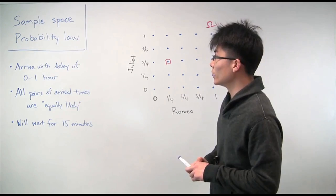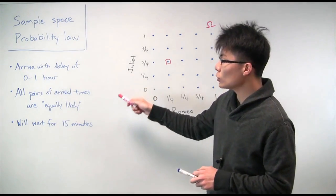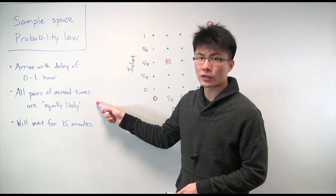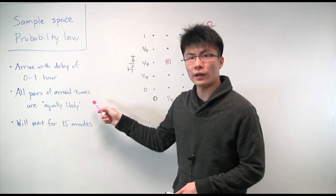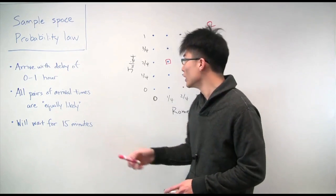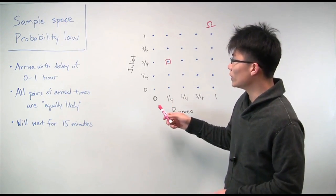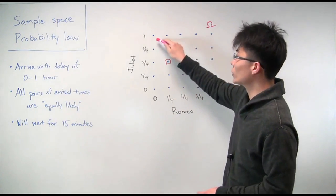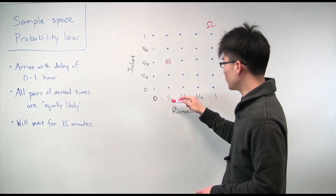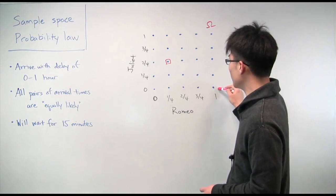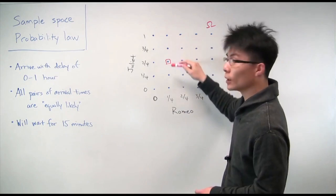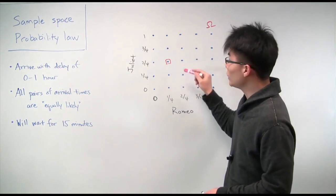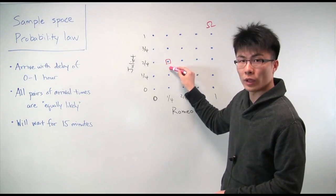Now let's try to assign a probability law. We'll continue to assume that all pairs of arrival times are equally likely. And now we can actually specifically specify what this term means. In particular, we'll be invoking the discrete uniform law, which basically says that all of these points, which are just outcomes in our probabilistic experiment, all of these outcomes are equally likely. And so since there are 25 of them, each one of these outcomes has a probability of 1 over 25.